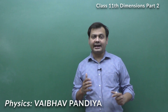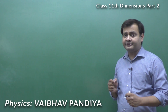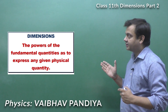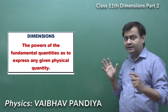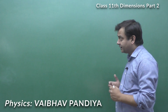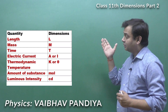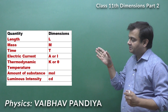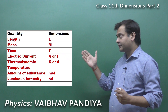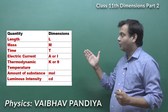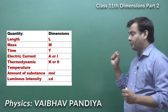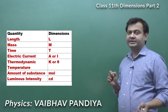Welcome to the second lecture of dimensional analysis. In lecture one, we saw the meaning of dimensions — the powers of fundamental quantities in any given physical quantity. In the SI system, there are seven fundamental quantities, each with a dimensional symbol: length (L), mass (M), time (T), current (A or I), thermodynamic temperature (K or theta), amount of substance (mol), and luminous intensity (cd).